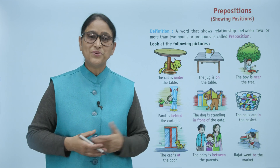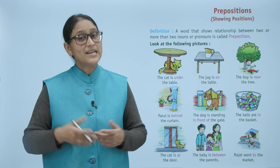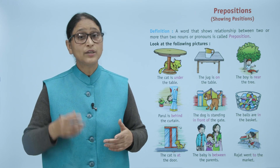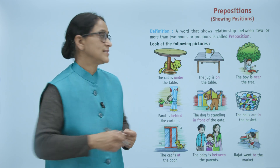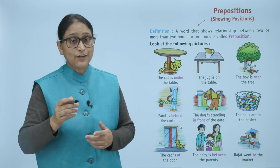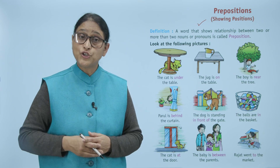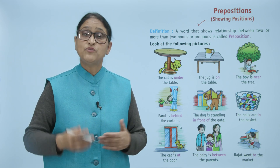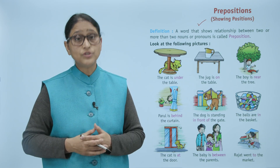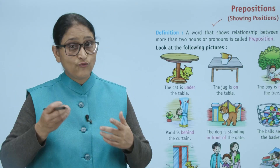Hello children, how are you? I hope you all are doing good. Now we will read prepositions showing positions. A word that shows relationship between two or more than two nouns or pronouns is called a preposition.